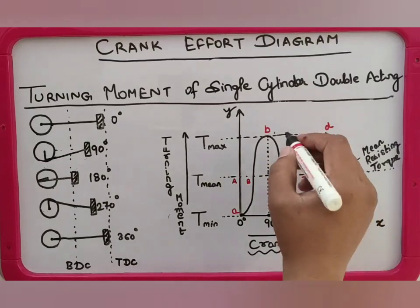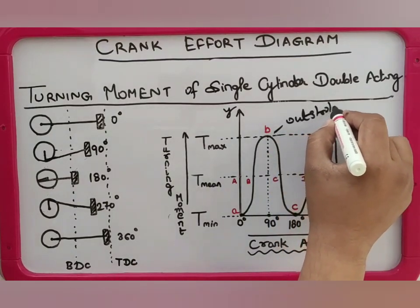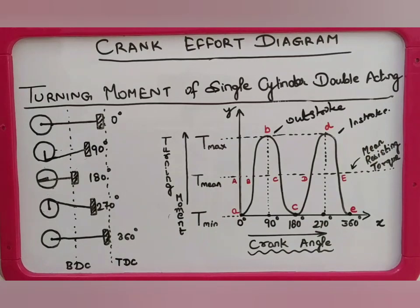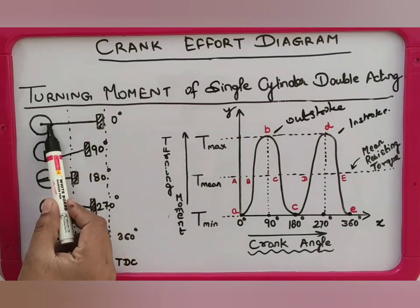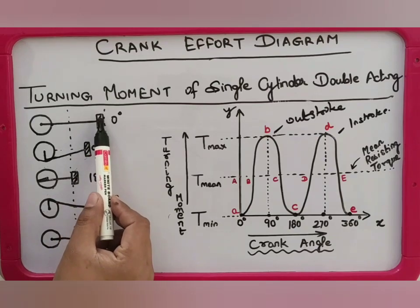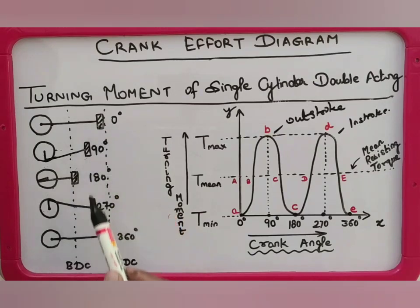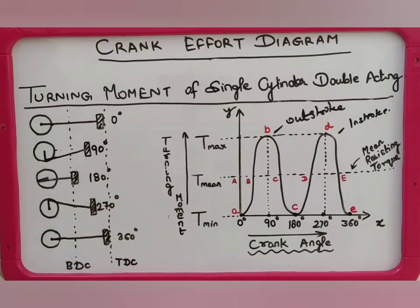Curve ABC is known as the outer stroke curve and curve CDE is known as the inner stroke curve. To understand what is the outer stroke curve and inner stroke curve, you can see on the left hand side where I have drawn a rough piston cylinder, crankshaft, and connecting rod assembly. You can see the crankshaft, then the connecting rod to which the piston is connected, and the piston is at its topmost position — that is the top dead center.